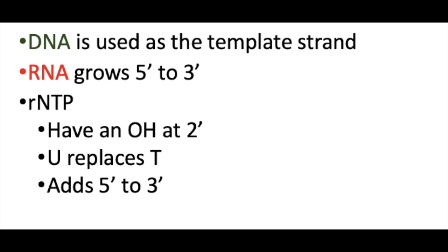The first thing you need to know is that DNA is used as a template. RNA grows 5' to 3'. rNTPs are used and have an OH at the 2' position, and uracil replaces thymine.